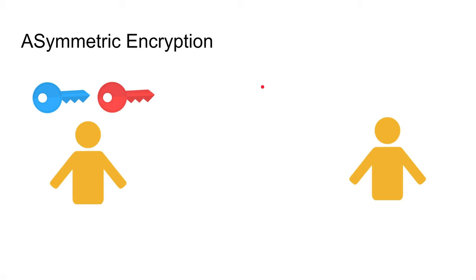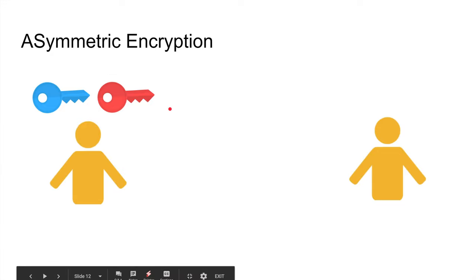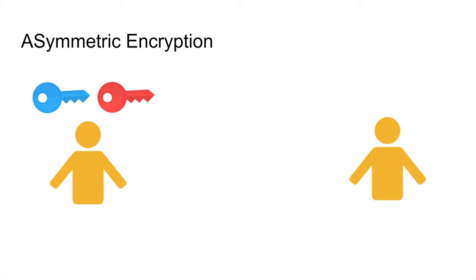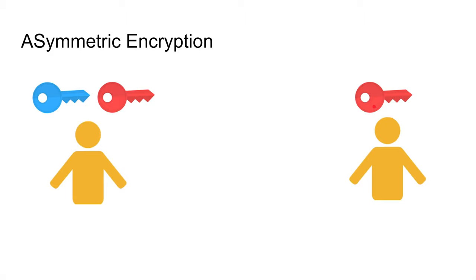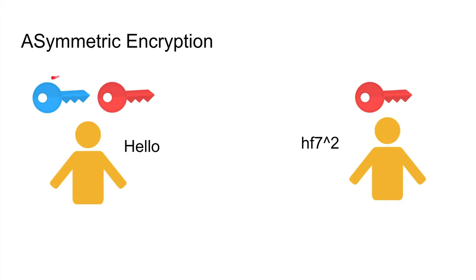So how does this work in networking? Everyone generates a public and private key pair instead of just one key. You send the public key to whoever you want to communicate with. They encrypt a message with your public key, send it back, and you decrypt it with your private key.